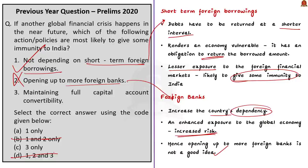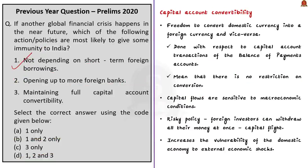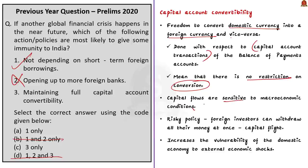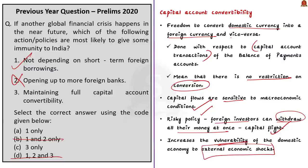The answer should be either option A or option C. Capital account convertibility is the freedom to convert domestic currency into foreign currency and vice versa with respect to capital account transactions of the balance of payments. Full capital account convertibility means no restriction on such conversion. Capital flows are sensitive to macroeconomic conditions, and foreign investors could withdraw all money at once — known as capital flight — which is very risky. This also increases vulnerability to external economic shocks. Hence, statement 3 is incorrect, and the answer is option A: one only.